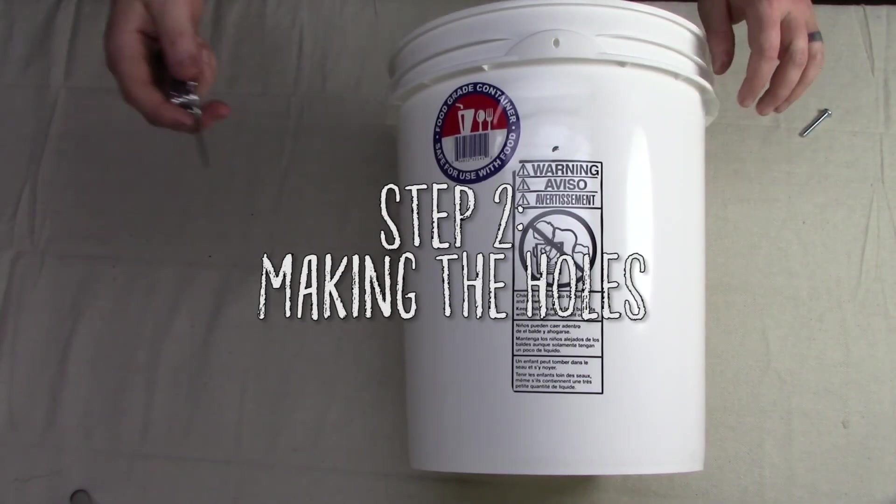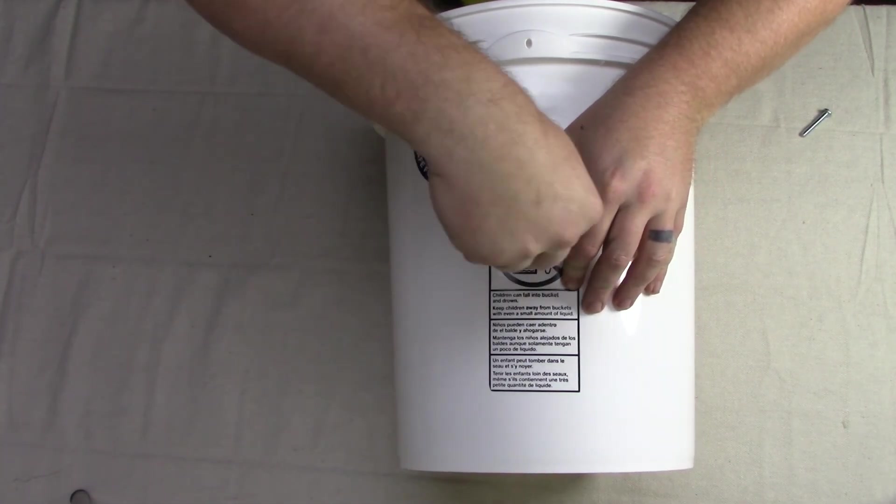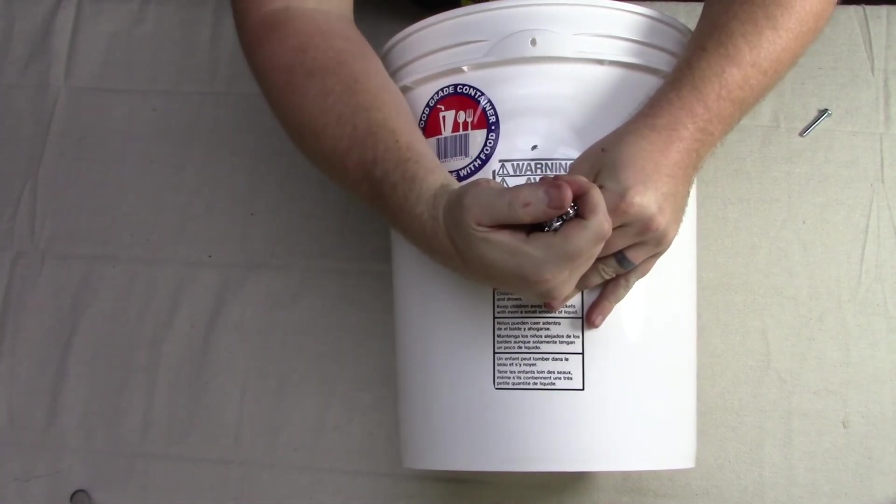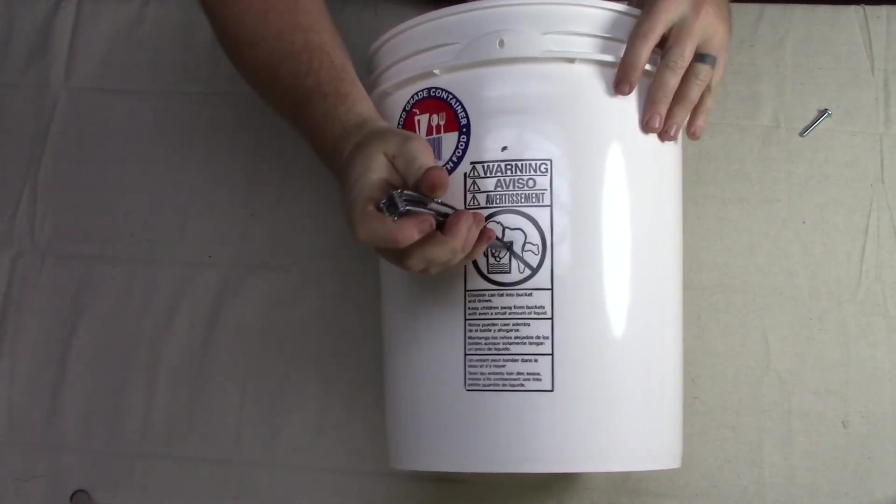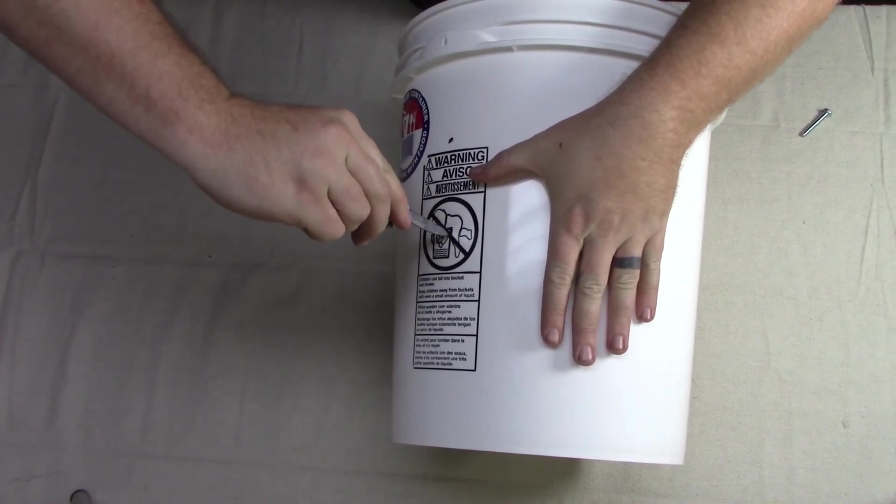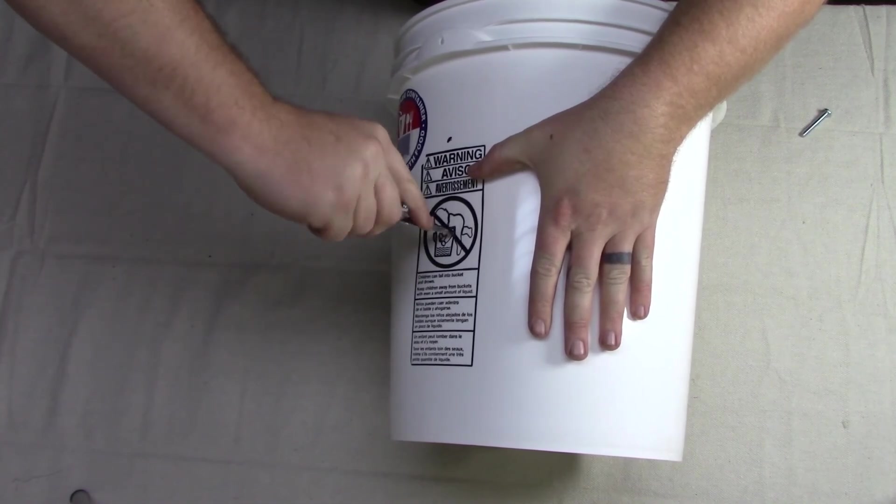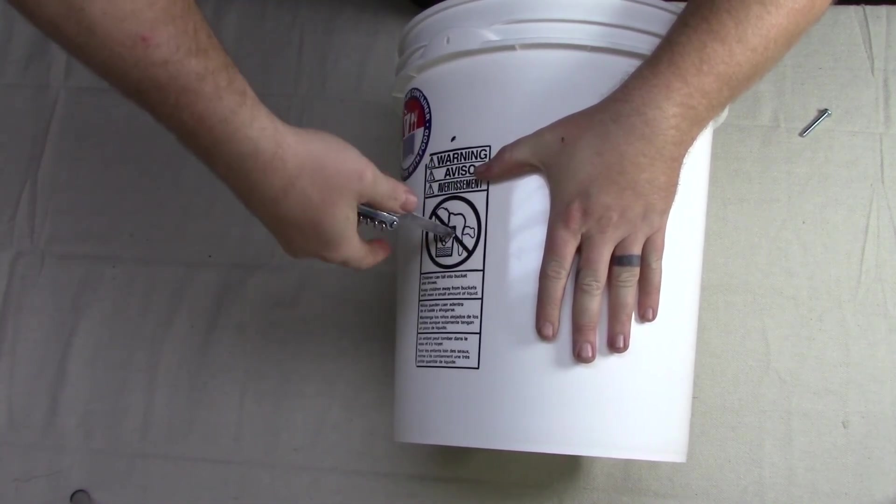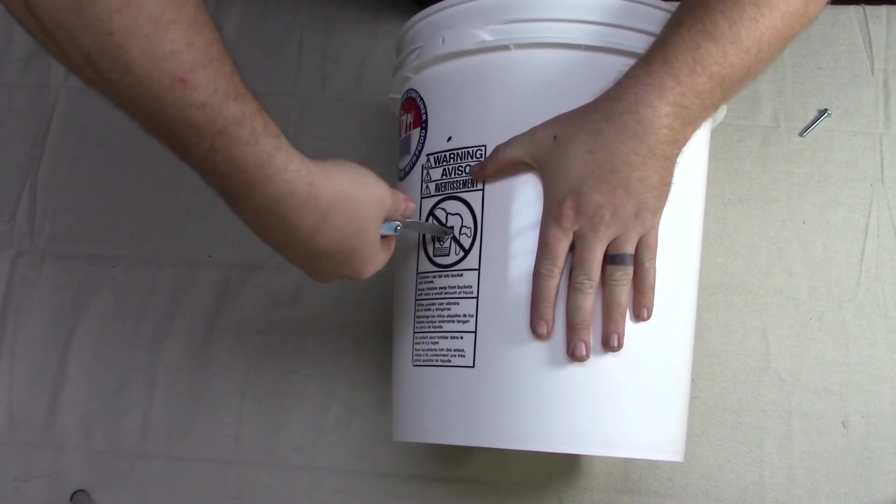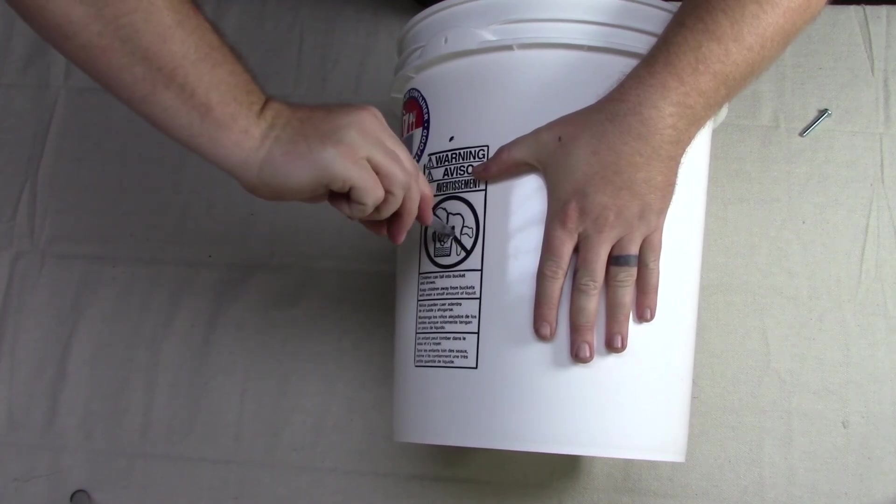Step two, making the holes. The first hole we will be making is where the bucket connects to the tripod. You want the hole to be fairly centered on the bucket, and I chose the center of the picture of the drowning baby. This will make sure that when it is fully assembled, it is behind the tripod, making for a much cleaner look. For this portion, you could easily use a drill to make all of the required holes. However, as a person on a tight budget, you may not have access to a drill.